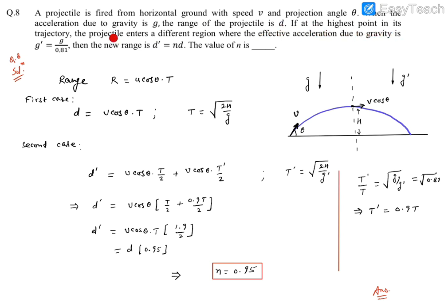If at the highest point of its trajectory, the projectile enters a different region where the effective gravitational value becomes g prime, which is g by 0.81, then the new range becomes d prime, which is nd. So we need to find this n.